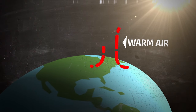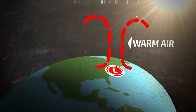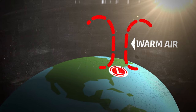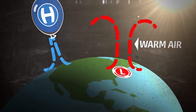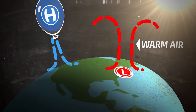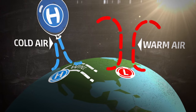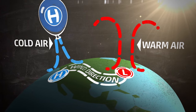Warm air expands and rises. It now weighs less and creates a low pressure area. This creates a pressure imbalance with nearby higher pressure, so air moves from high pressure to low pressure.